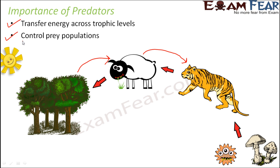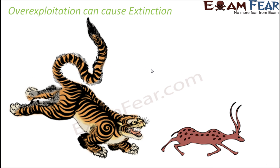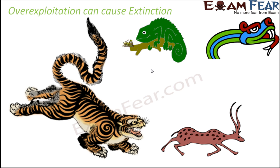The second advantage is that predation helps to control the prey population. Since the tiger feeds on herbivores, the herbivore population remains within control — otherwise the number of herbivores would increase to a very large extent. However, if there is overexploitation by the predators, that can cause extinction. If the tiger eats too many deer, the entire deer species might become extinct. And if the deer become extinct, the predators will not get any more food, so the predator will also gradually become extinct. So overexploitation can cause extinction, and this is true for any predator-prey relationship.